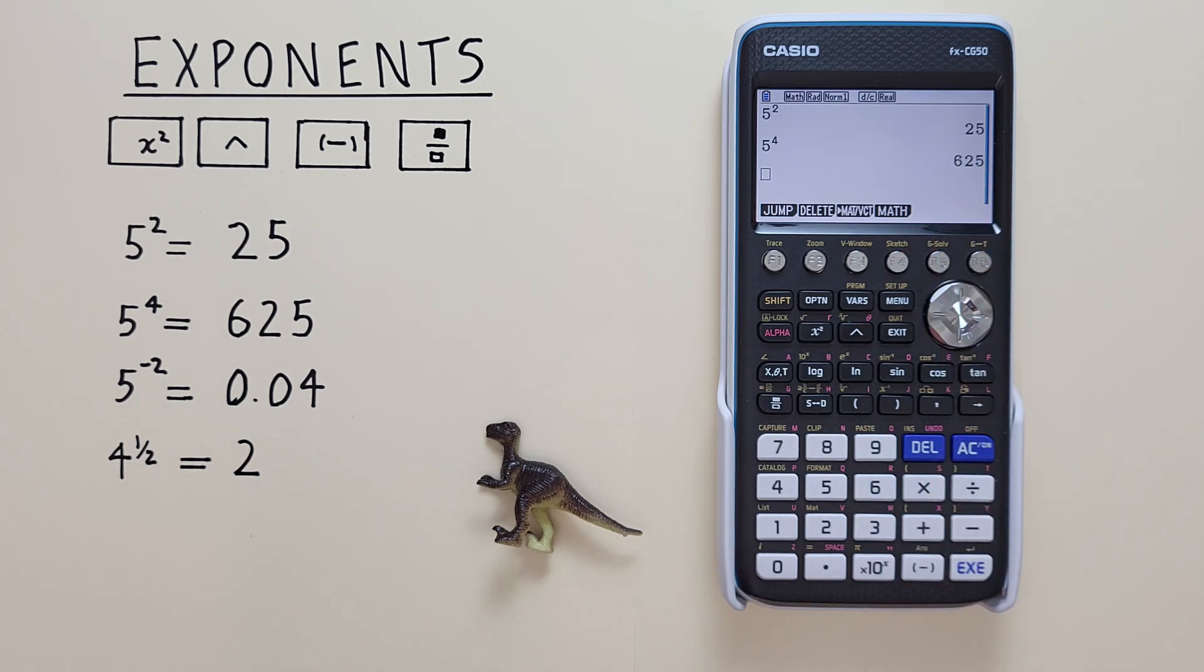What if we have a negative exponent, like for example 5 to the power of negative 2? Well again we start by putting the 5 on our screen, and then hit the up arrow or caret key, and then we need to tell our calculator we're doing a negative exponent. So for that we use the negative sign here, not the subtraction key, this negative sign down here.